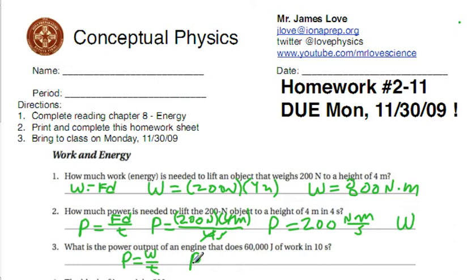So simple substitution gives you the equation 60,000 joules divided by 10 seconds. So the power equals 6,000 joules per second or 6,000 watts.